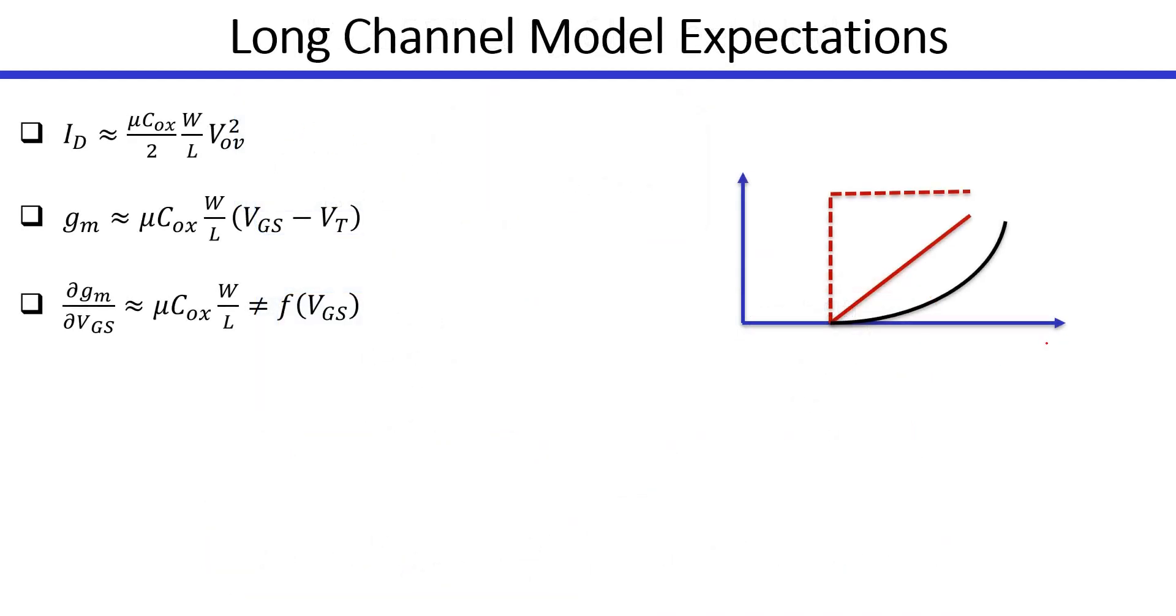If we plot VGS on the x-axis, ID will be given by this quadratic relation. And of course, this is the threshold voltage VT. If we take the derivative of ID, we will get the transconductance GM and GM will be linearly dependent on VGS. So this will be our GM. If we take the second derivative of the current, we will take the derivative of GM with respect to VGS. It will be a constant value that is independent of VGS. So this will be the derivative of GM with respect to VGS. Again, this is our simplified long channel model. So let's go to ADT and see the actual device characteristics.